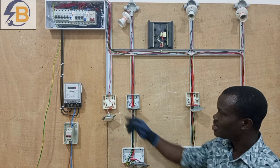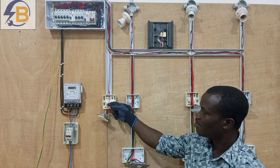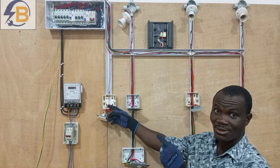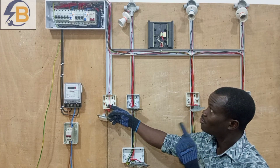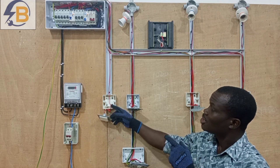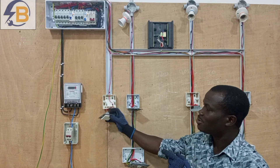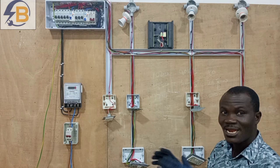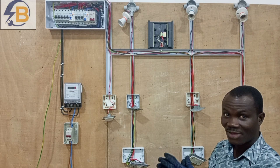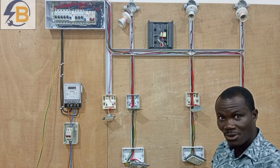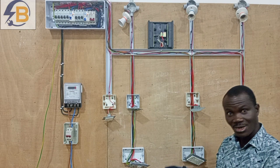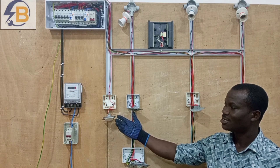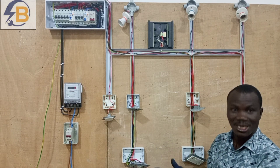For instance, if we take this particular wire, we want to know that from the consumer unit at the point that it is connected to this very point that it is terminated, there is no break at any part of that cable, and that the cable is continuous to be able to convey electric current to the intended terminal.